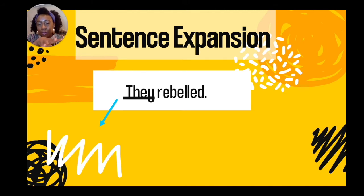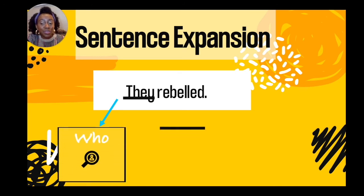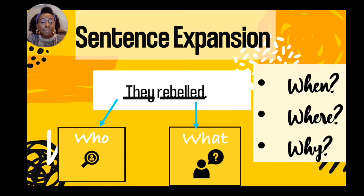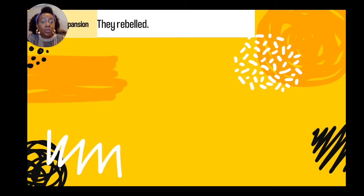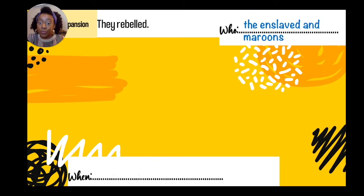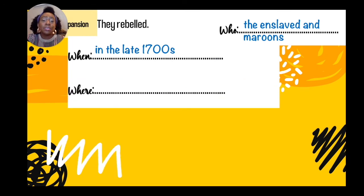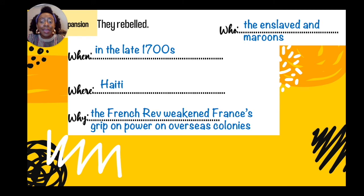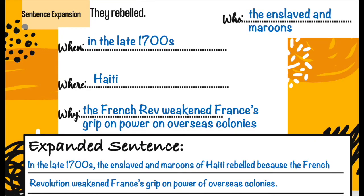Let's look at another example: 'They rebelled.' It tells us the who and the what, but it's missing the when, the where, and the why. We want to expand this sentence. Who: the enslaved and maroons. When: in the late 1700s. Where: Haiti. Why: the French Revolution weakened France's grip on power on overseas colonies. Expanded sentence: 'In the late 1700s, the enslaved and maroons of Haiti rebelled because the French Revolution weakened France's grip on power over overseas colonies.'